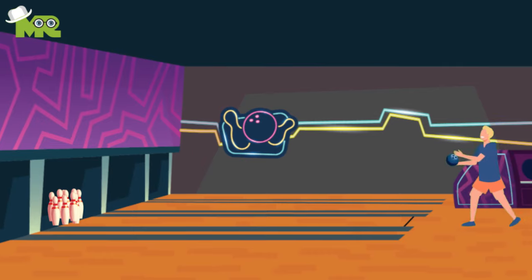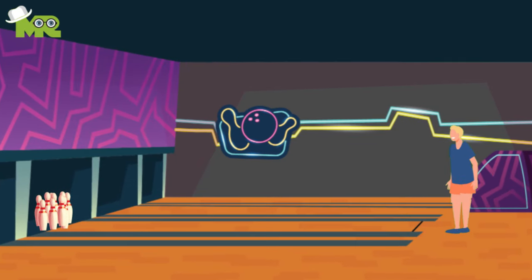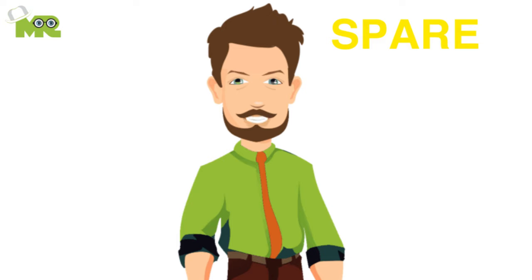If a frame doesn't have a strike or a spare, it's known as open. You get to add the pins in your next ball to that frame if you bowl a spare. You get to add the next two balls if you throw a strike.